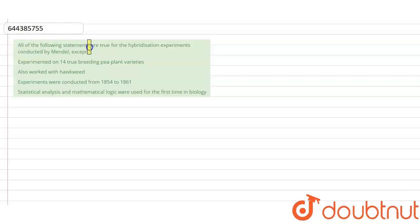All of the following statements are true for the hybridization experiments conducted by Mendel except, here are the list of answers. The first one is experimented on 14 true breeding pea plant varieties. Second option, also worked with hawkweed. Third, experiments were conducted from the year 1854 to 1861. Statistical analysis and mathematical logic were used for the first time in biology.